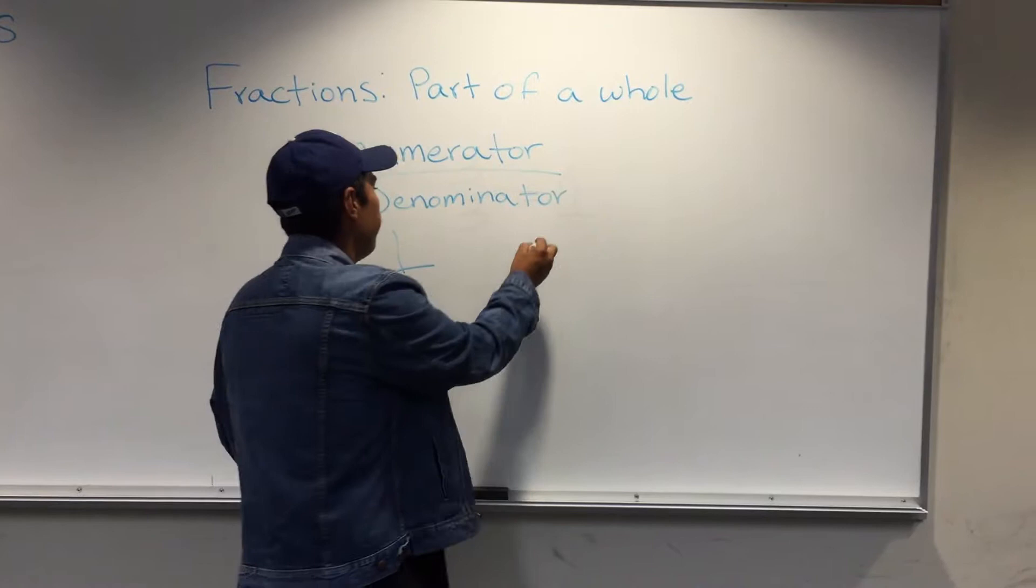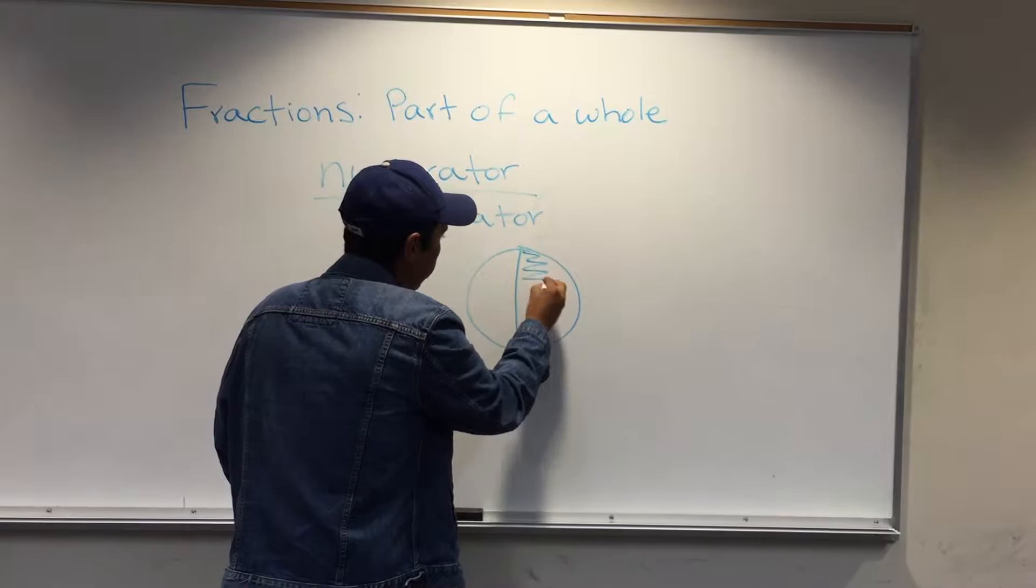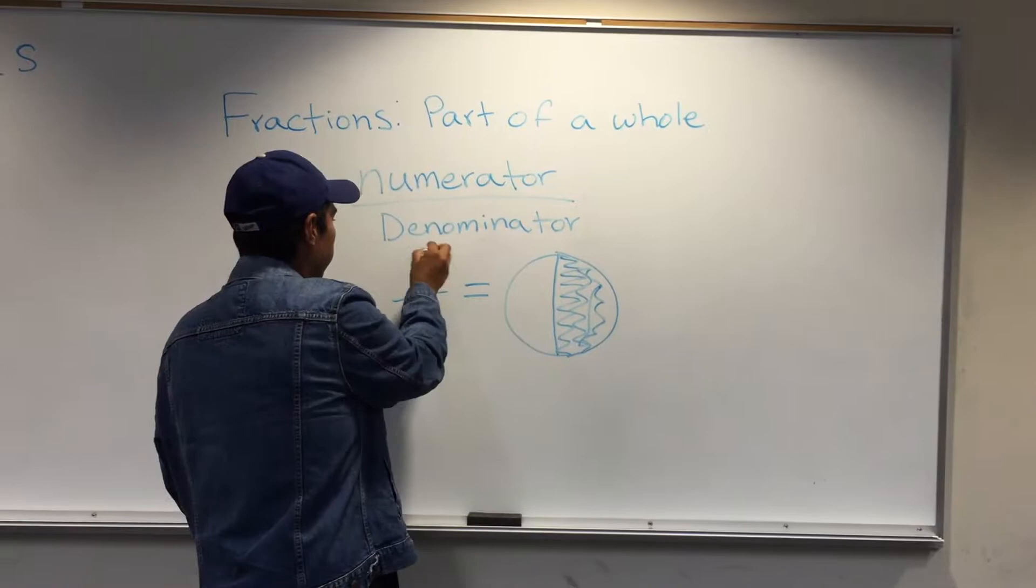One half would represent the shaded part of the pizza. And half the shaded area would be... This.